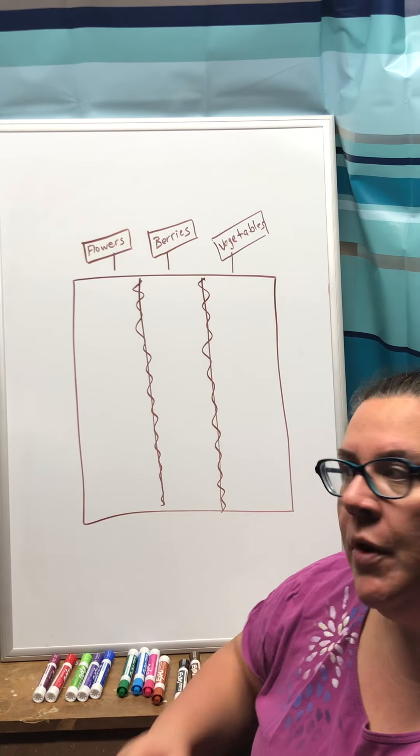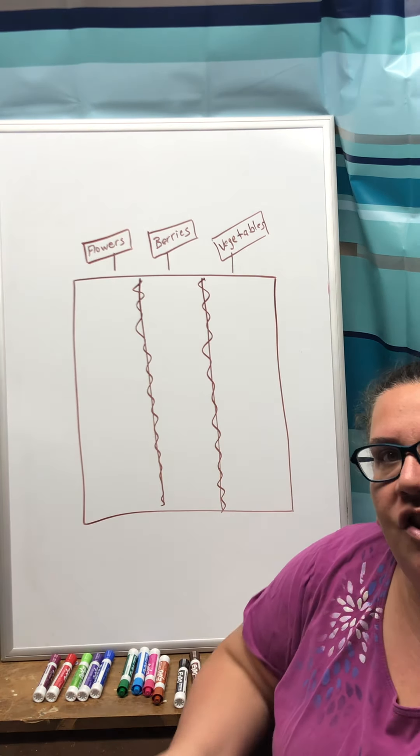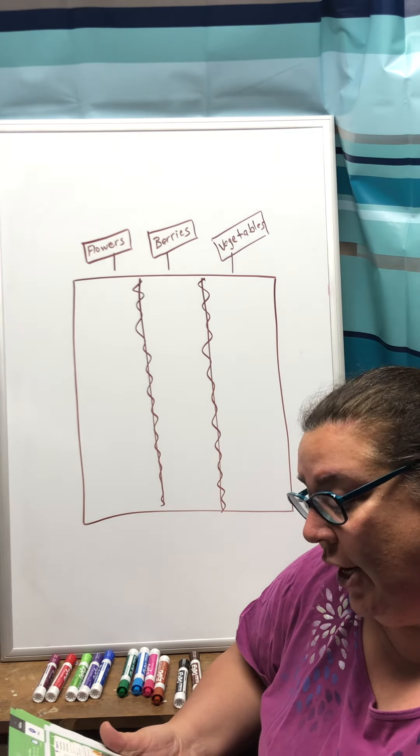For this problem we are going to be dividing up a garden. So the solve and share, I'm going to do the solve and share and the look back together because the look back is asking me to write an equation that models this problem.